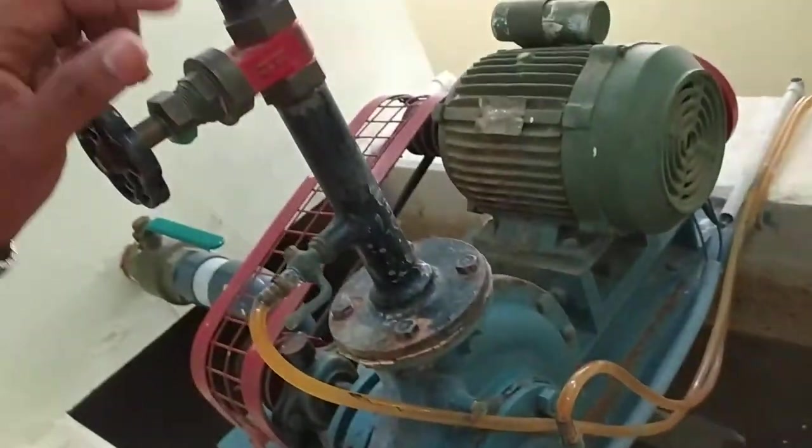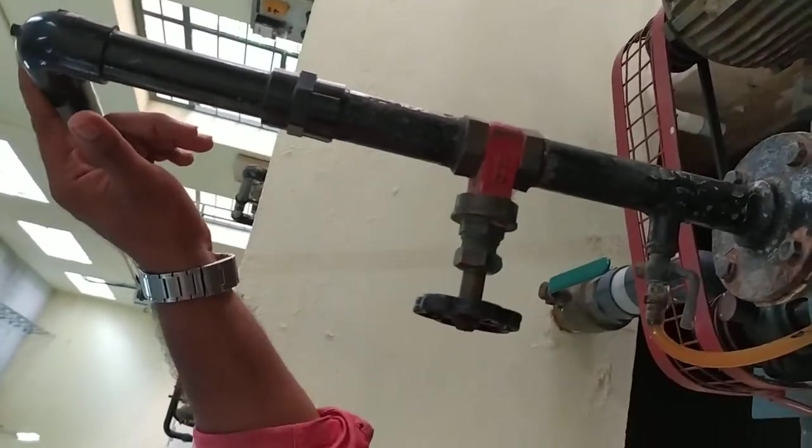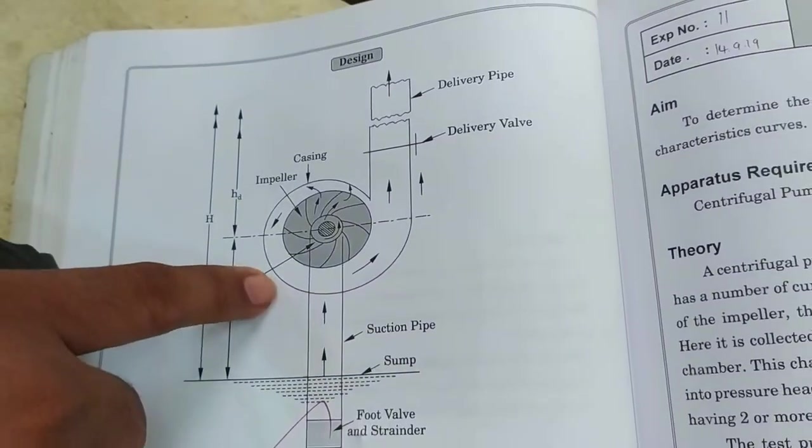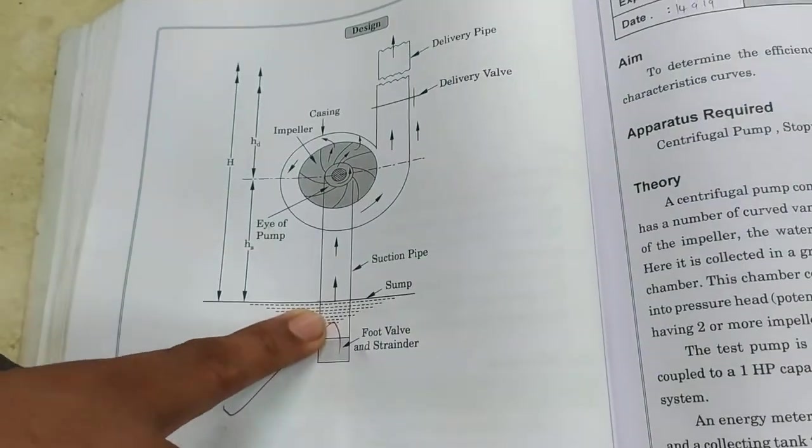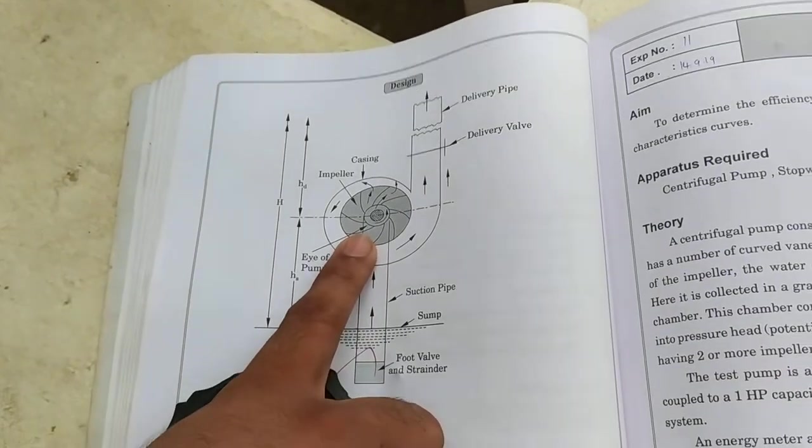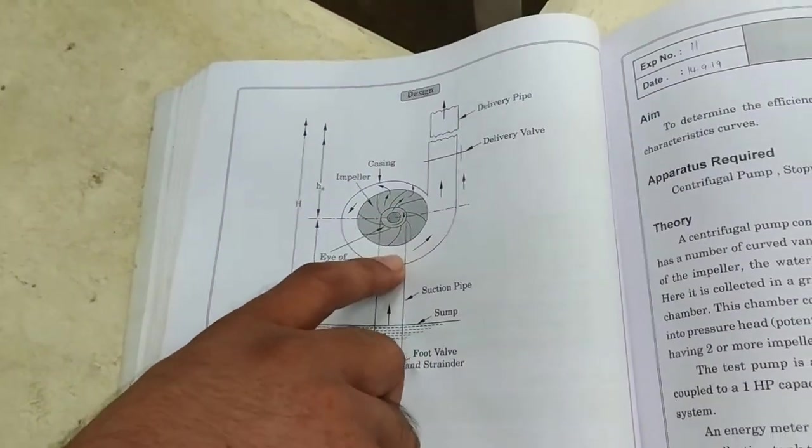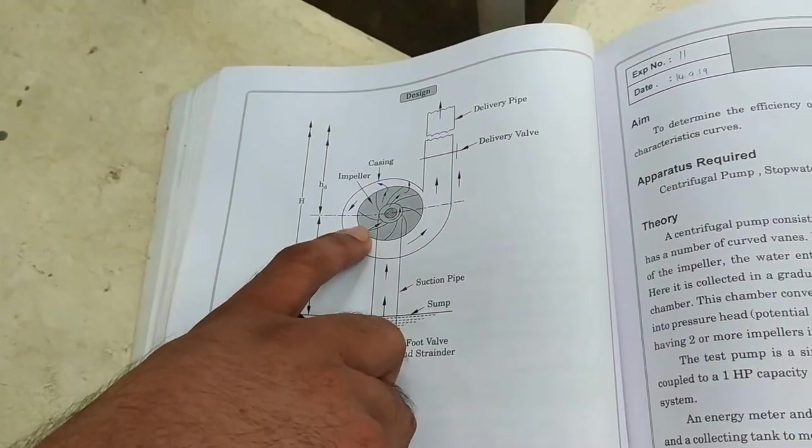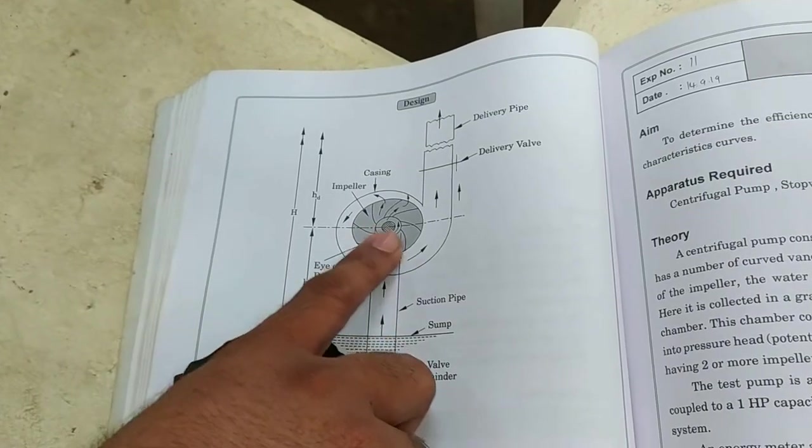This is your inlet pipe and this is your delivery pipe. So inlet pipe, which is also called a suction pipe, drives water into the casing that starts rotating by the effect of centrifugal force developed by the rotation of the impeller.